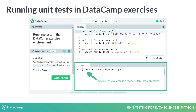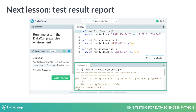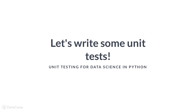You can run any command line expression in the IPython console by adding an exclamation mark before the expression. For example, to run the pytest command, you have to use exclamation pytest, as shown in the picture. Running this command will output the test result report, which contains information about bugs in the function, if any. We will cover the test result report in the next video lesson. But now, let's practice writing some simple unit tests using the test module.